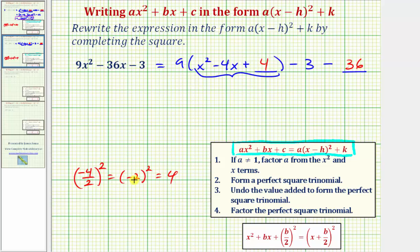Notice here, b divided by two is actually negative two, so we are going to have the quantity x minus two squared, but let's also show how to factor this like we normally would. We would have two binomial factors, and here we have negative three minus 36, which would be negative 39.